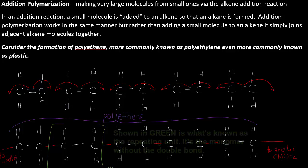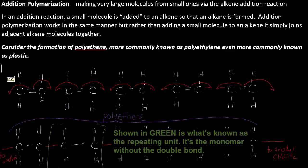Shown in green is what's known as the repeating unit — it's the monomer without the double bond. So C2H4, that formula, would be known as ethene. The double bond has been removed, but the resulting polymer is still named as if the double bond was present: polyethene.